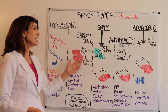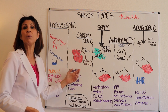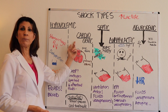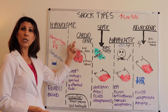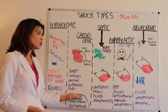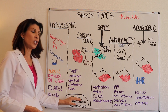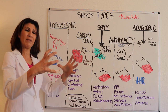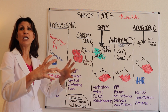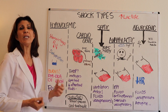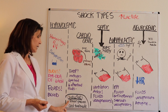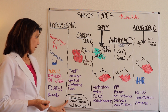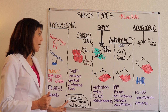There are also obstructive forms of cardiogenic shock. Tension pneumothorax and cardiac tamponade involve the pump being compressed or squeezed. These are relatively easy to treat if you can relieve the pressure around the heart.